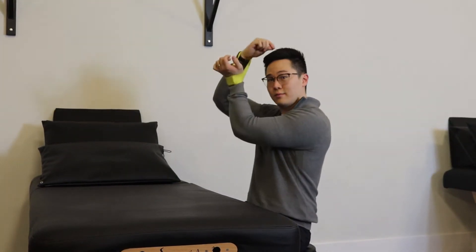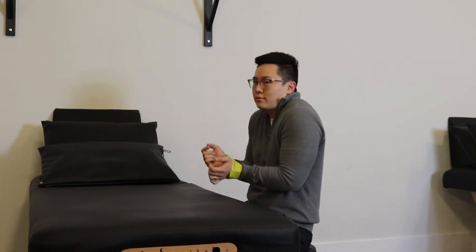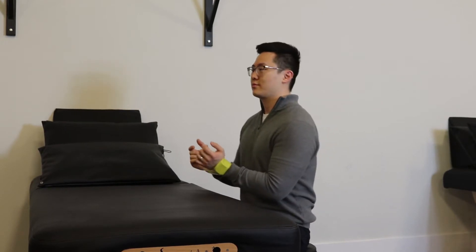Start by placing a band around your wrist. You're going to pretend there's a string from the ceiling pulling you nice and tall. Try not to shrug your shoulders.